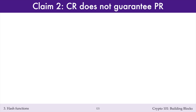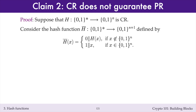I'll next prove that collision resistance does not guarantee pre-image resistance by constructing a hash function that is collision resistant but isn't pre-image resistant. Suppose that h is an n-bit hash function that is collision resistant. Consider the n+1-bit hash function h-bar defined as follows: if x has bit length n, then h-bar of x is x with a 1-bit appended to its left; whereas if x has bit length other than n, then h-bar of x is h of x with a 0-bit appended to its left. Both these hash values have bit length n+1, so h-bar is indeed an n+1-bit hash function.